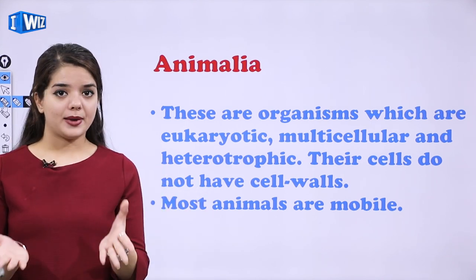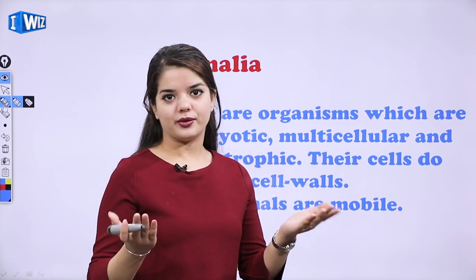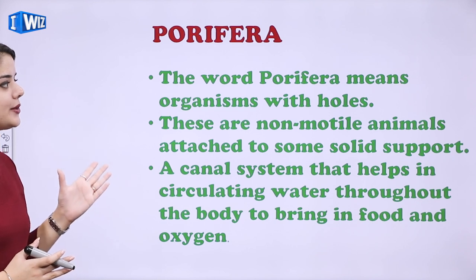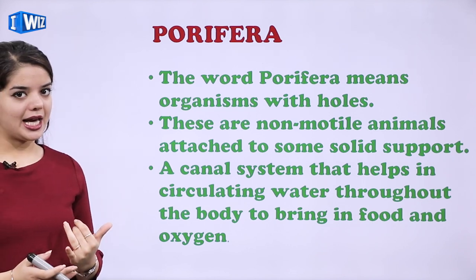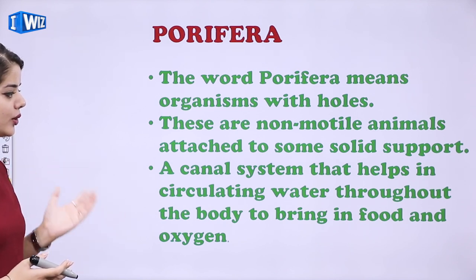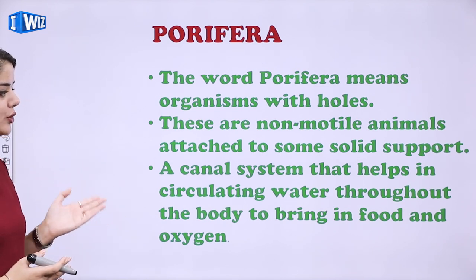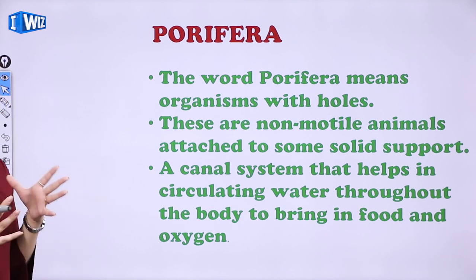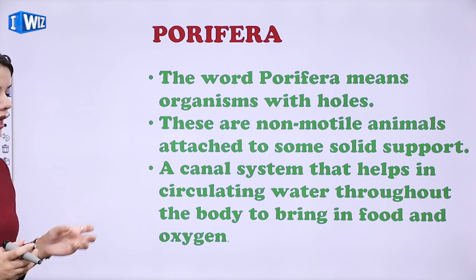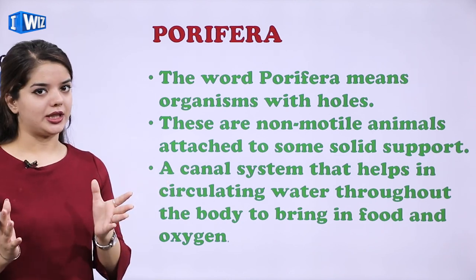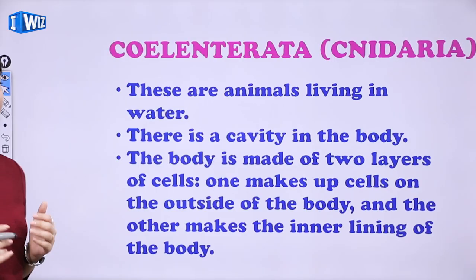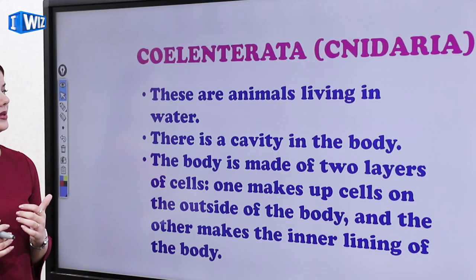Within Animalia, first comes Porifera. The word Porifera means organisms with holes. Yeh non-motile animals hoti hai, attached to some solid support, and they have a canal system that helps in circulating water throughout the body to bring in food and oxygen. An example of Porifera is Spongilla.